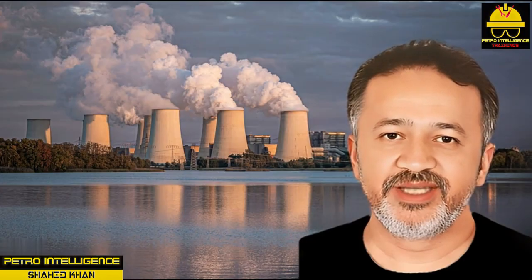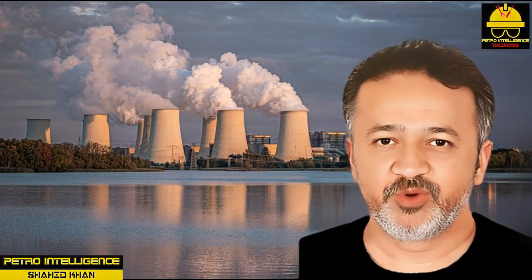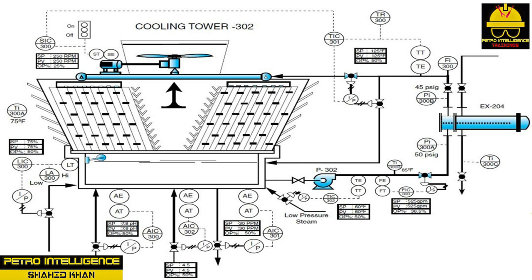Fan speed and temperature control SIC-300, a speed indicating controller: the speed on the fan is set at 250 RPM and can be adjusted by the technician. An on-off switch is also located near the motor.